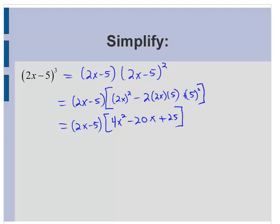Now all I need to do is multiply this binomial by the trinomial. And I'll go ahead and use some colors here. So distributing the 2x in, I'd have 8x cubed. 2x times minus 20, that would be minus 40x squared. 2x times 25 would be plus 50x. Now distributing the minus 5 through, I'd have minus 20x squared, plus 100x, and minus 125. Combining like terms, 8x cubed minus 60x squared plus 150x minus 125.